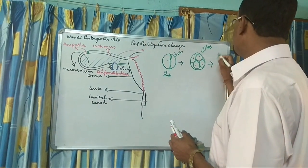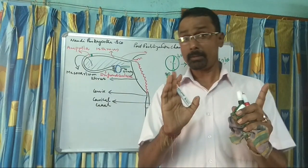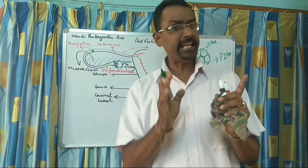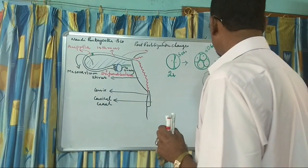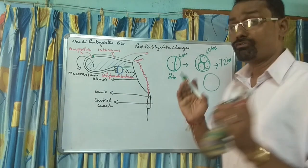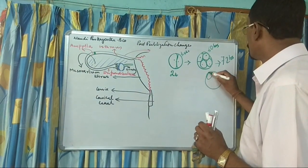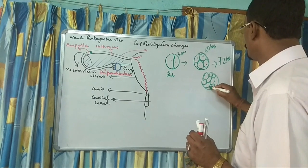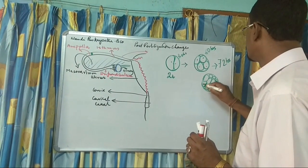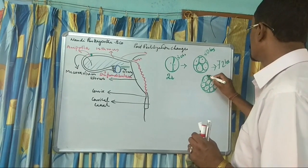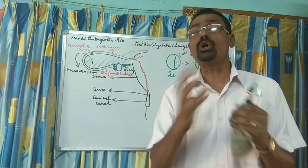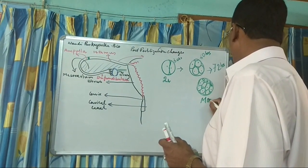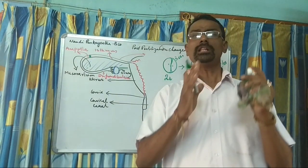The third cleavage occurs at 72 hours, giving rise to 16 to 32 cells total. These cells form a solid ball-like structure that is called the Morula — M-O-R-U-L-A.